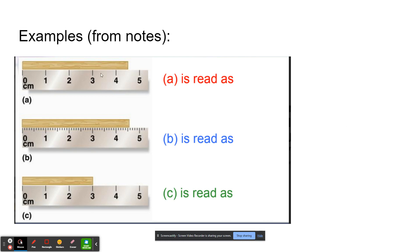This one is the same thing as A — it's just going to be three — but you can guess one more digit, and it's pretty much spot on, so you'd say it's 3.0, and that would be two sig figs.